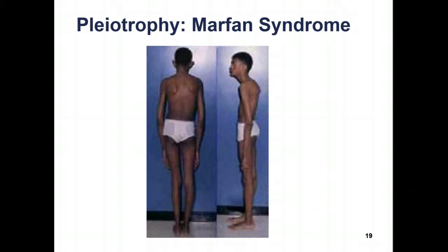Marfan syndrome has a wide range of expressions from mild to severe. The most serious complications are defects of the heart valves, aorta, lungs, eyes, spinal cord, and hard palate. The mutation can also affect heart valves and weaken the aorta. Marfan syndrome is another example of where a single mutation in a single allele affects a wide range of things in an organism's body. Marfan syndrome is also autosomal dominant — when a trait is autosomal dominant you only need one mutant copy to have the disorder.